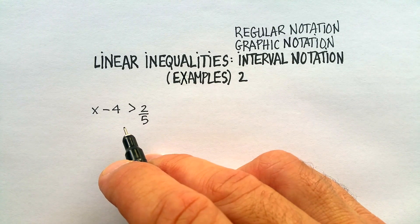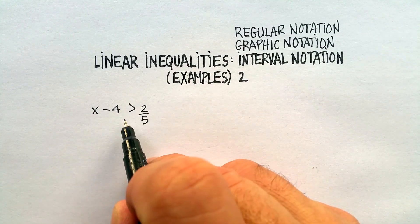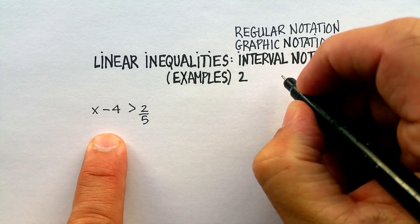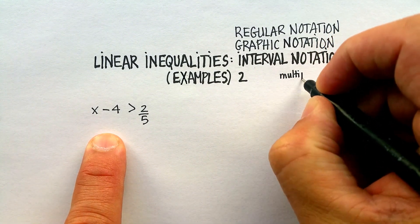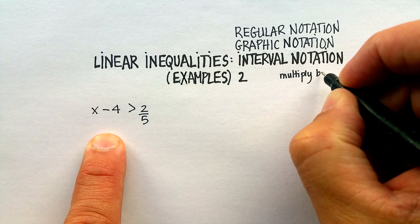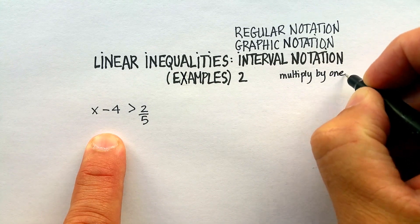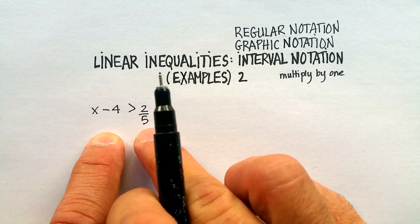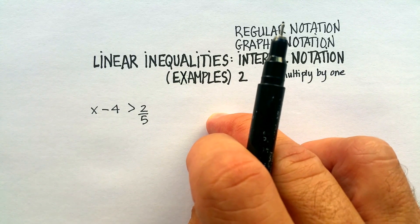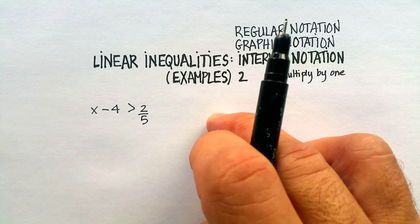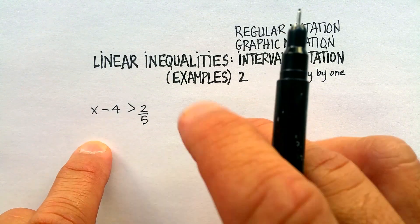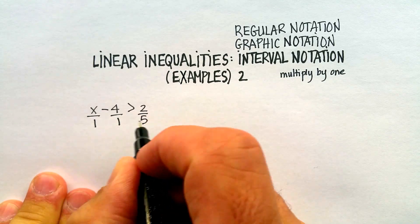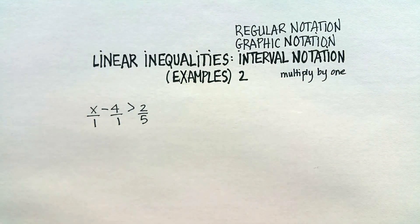Here's our first inequality: x minus 4 is greater than 2 over 5. I chose these fractions specifically to show you a technique called multiplying by 1 — multiplying by 1 to clear fractions, to make your problem not have any fractions in it. This is particularly useful when you have rational equations and polynomial fractions. I notice there are three denominators here: 1, 1, and 5, and we want to clear those.